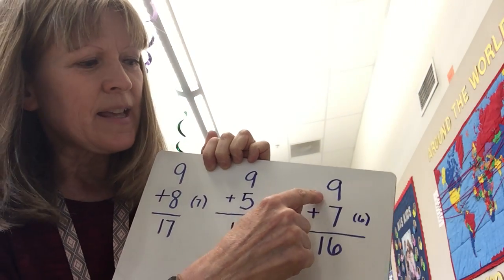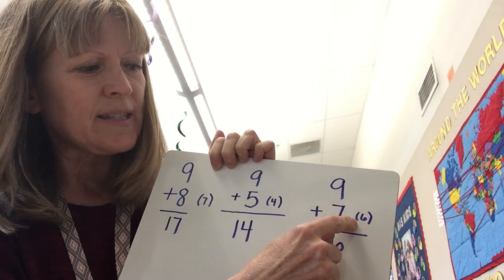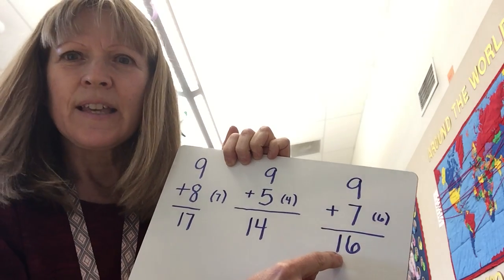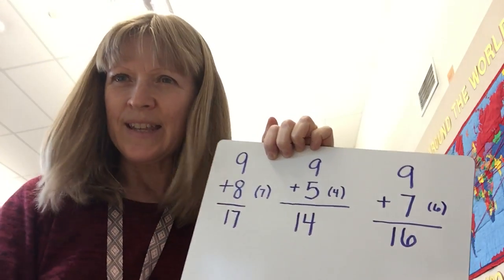Look at this one. Nine plus seven. One less than seven is six. The answer is 16. Isn't that easy?